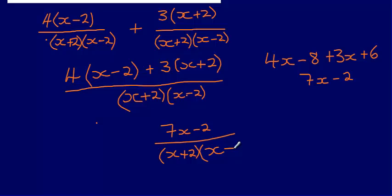However, what we can see here is that 7x - 2 won't factorize, and so we can just leave it as (7x - 2)/((x+2)(x-2)).